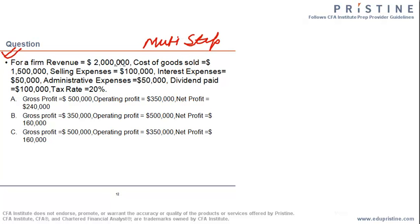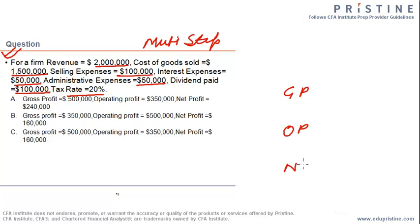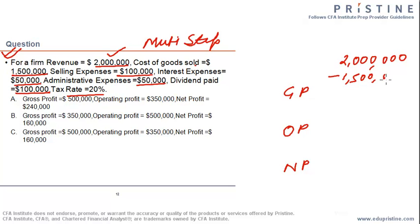Now let us look at a numerical question using a multi-step income statement. Revenue is $2 million, cost of goods sold is $1.5 million, selling expenses are $0.1 million, interest expense is $50,000, admin expense is $50,000, and the tax rate is 20%. Starting with revenue of $2 million, reducing COGS of $1.5 million gives a gross profit of $0.5 million, or $500,000.